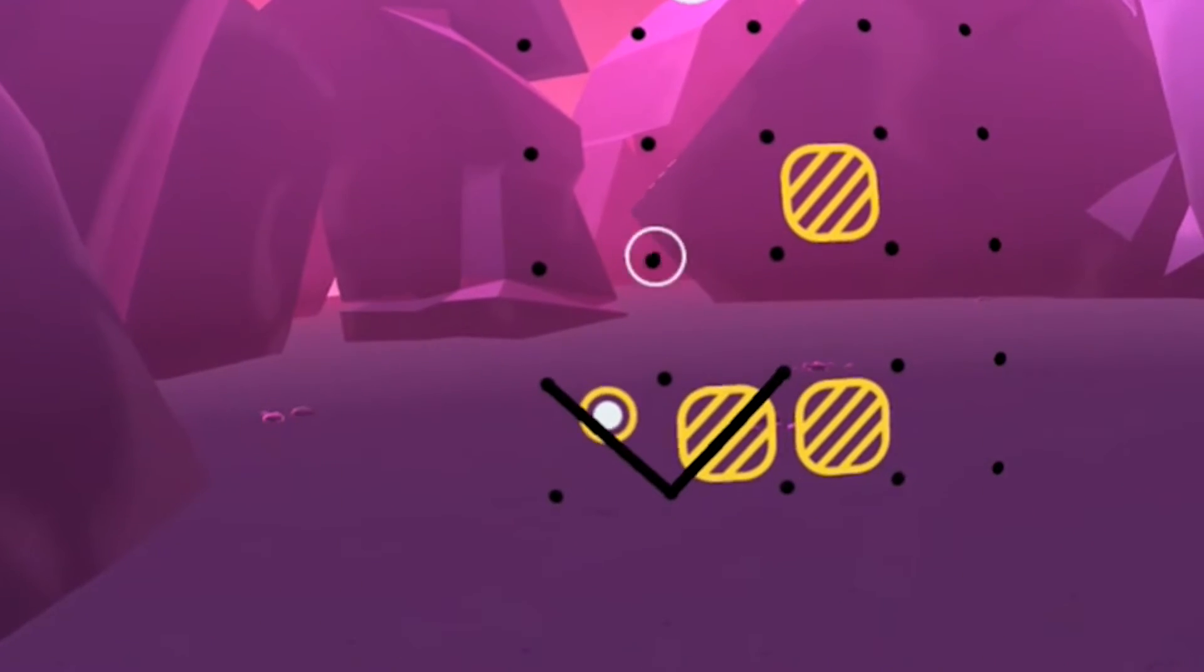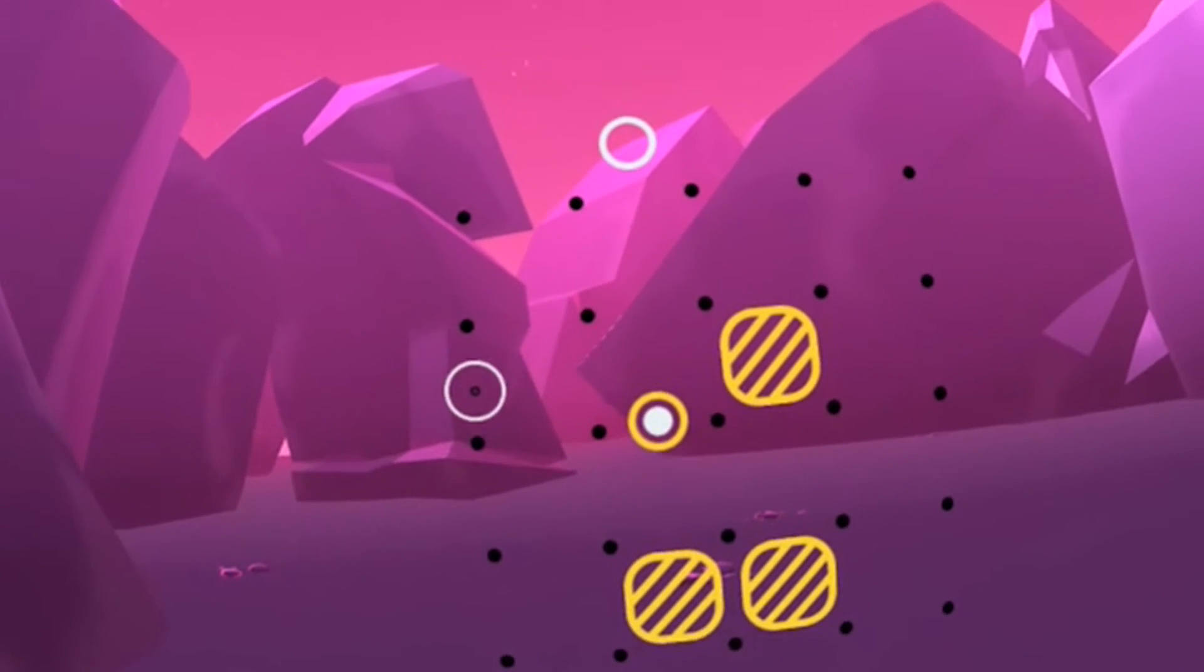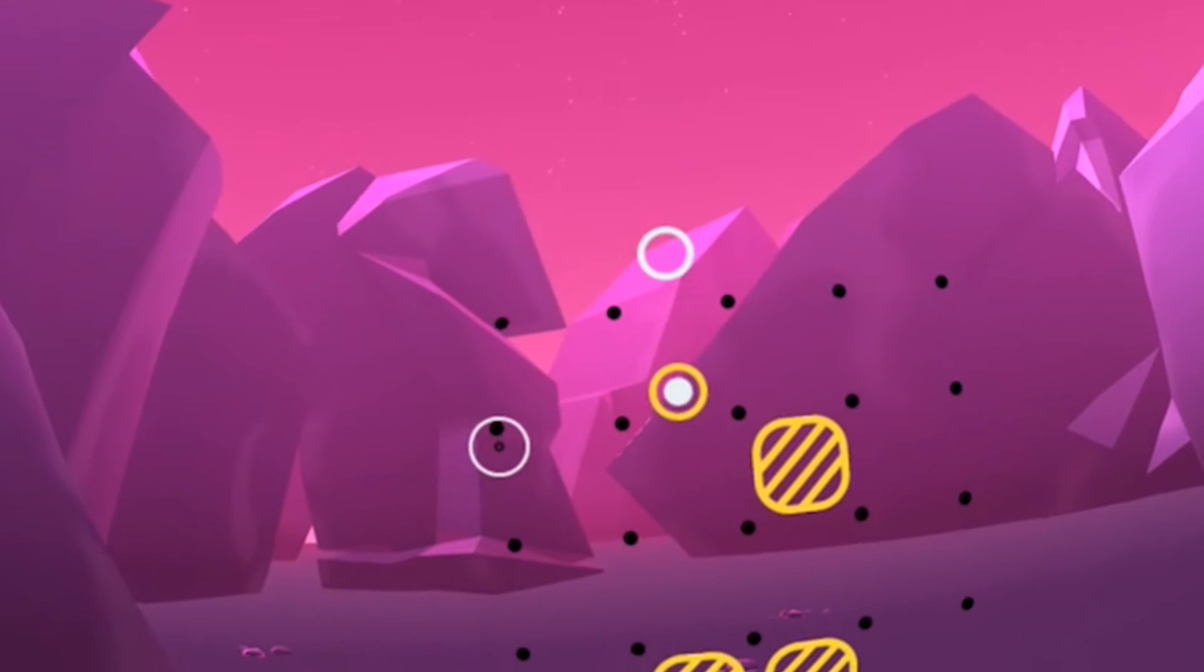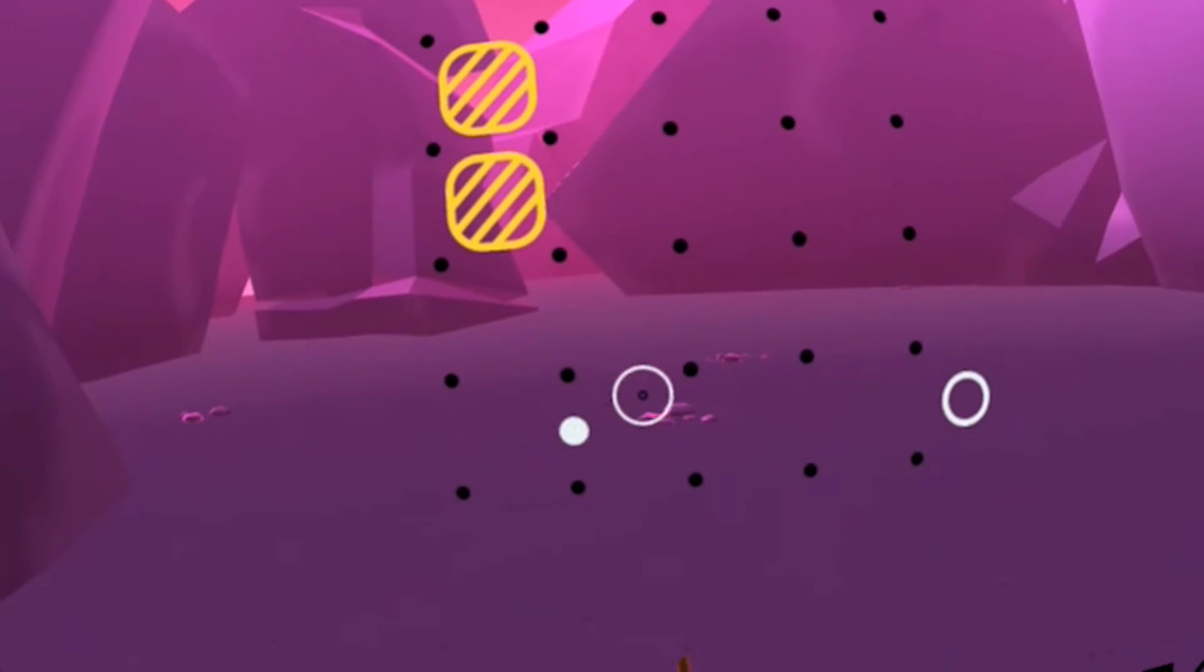You are presented with a grid of points that you can connect by drawing lines with your motion controller. You do so in order to change the course of a ball that comes flying into this grid and gets reflected from the lines that you draw.